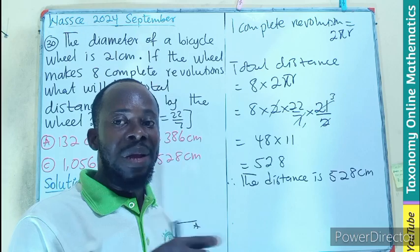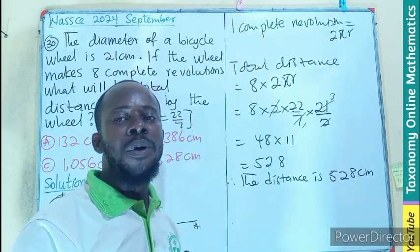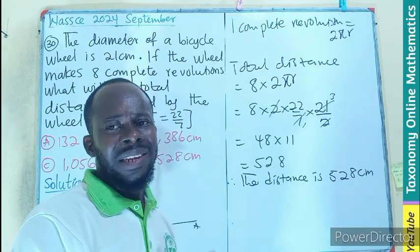So that is for a complete revolution. The wheel of a bicycle rotating is rotating in the form of the circumference of that circle. Again, this is clear.